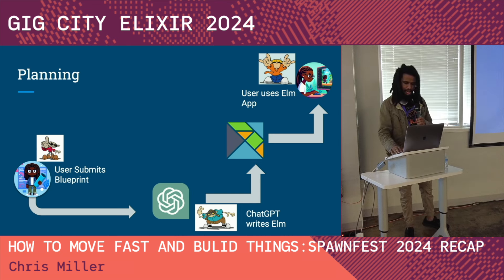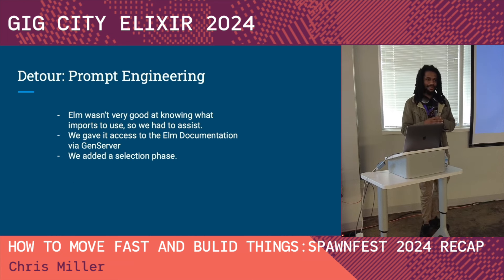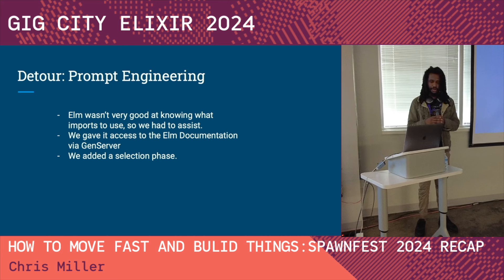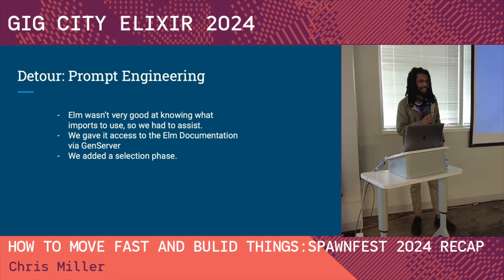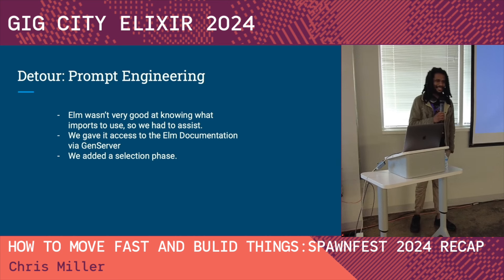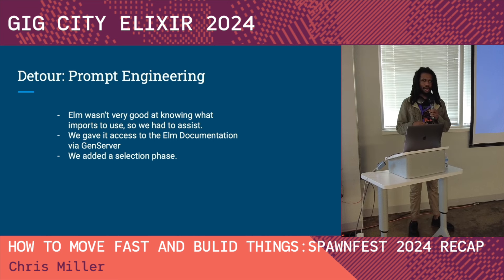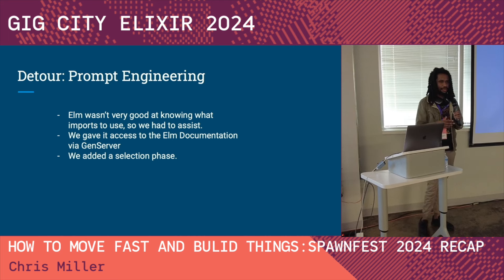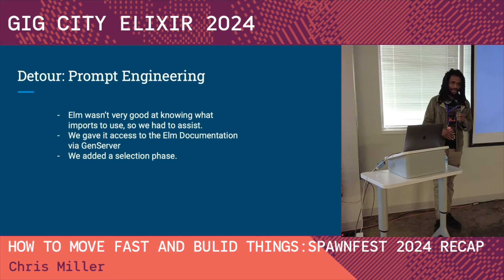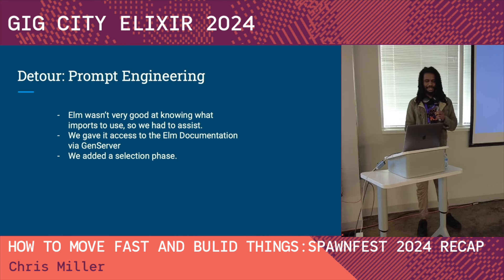We realized we needed to help it write better programs. When it first started writing functions it didn't actually know what functions it had access to — it would try to use `List.map` but List wasn't imported, so the code wasn't compiling. We had to add a step to our shell process where we ask ChatGPT to think about what modules it needs to import to solve the problem for whatever the prompt was. That took a lot of effort.